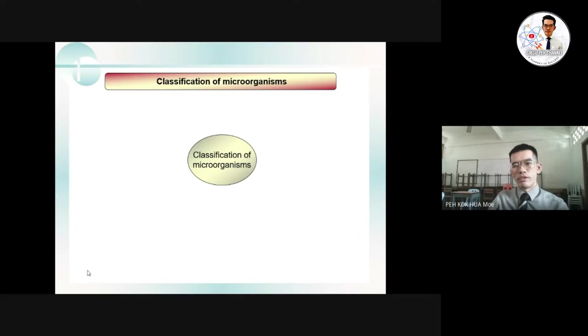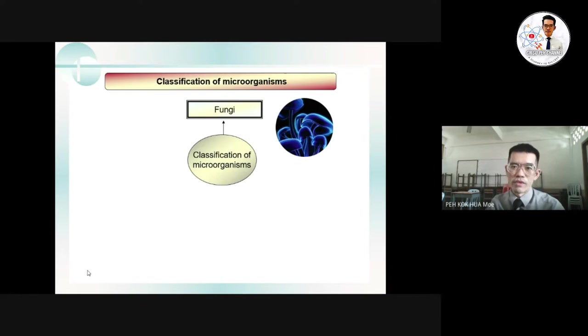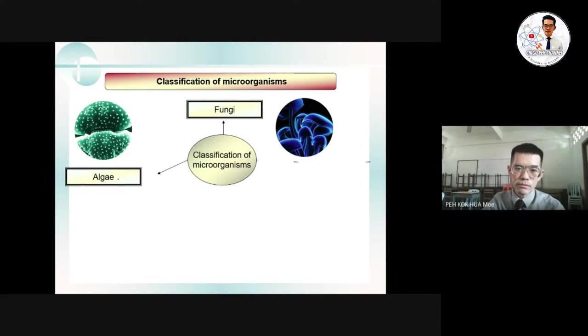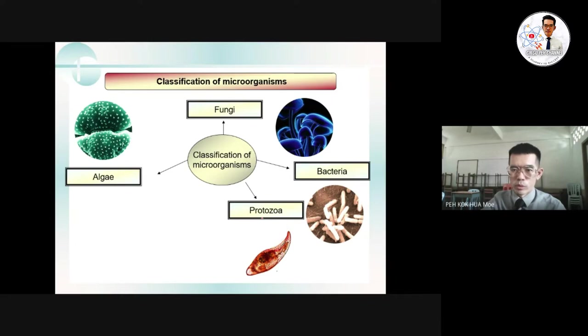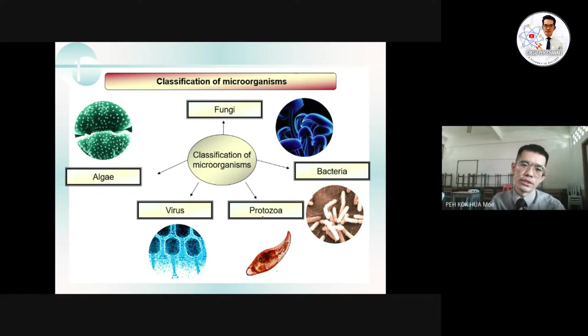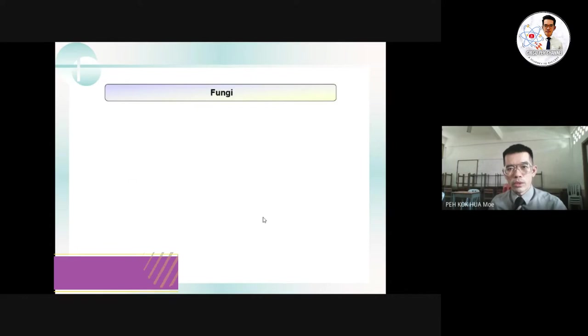Microorganisms can be classified into five groups: fungi, algae, bacteria, protozoa, and virus. These five groups are classified based on their characteristics as mentioned.